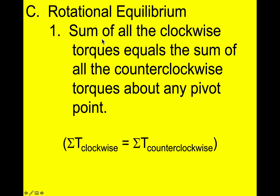In rotational equilibrium, the sum of the clockwise torques equals the sum of the counterclockwise torques about any pivot point. The Greek letter sigma means sum — so if you add up all the clockwise torques and all the counterclockwise torques, and the system is in rotational equilibrium, the clockwise total and the counterclockwise total will be equal to each other.